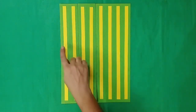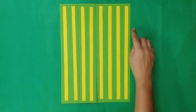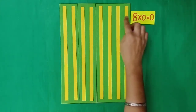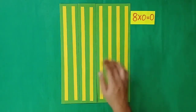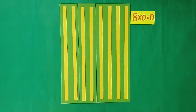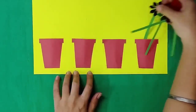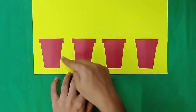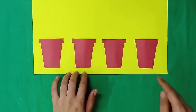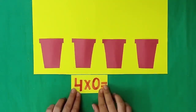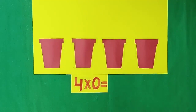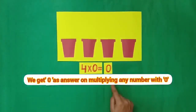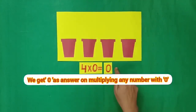Now I picked up this horizontal paper strip. We have no horizontal paper strip on these vertical strips. It means 8 multiplied by 0 is equal to 0. I also took away flowers from these flower pots — all 4 flower pots are empty now. We learnt 4 multiplied by 0 is equal to 0. We get 0 by multiplying any number with 0.